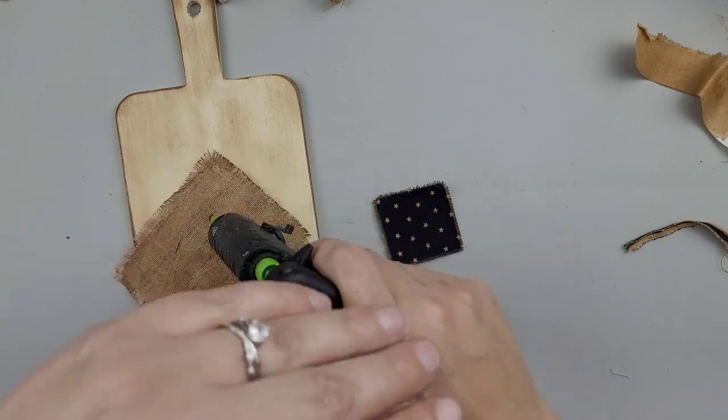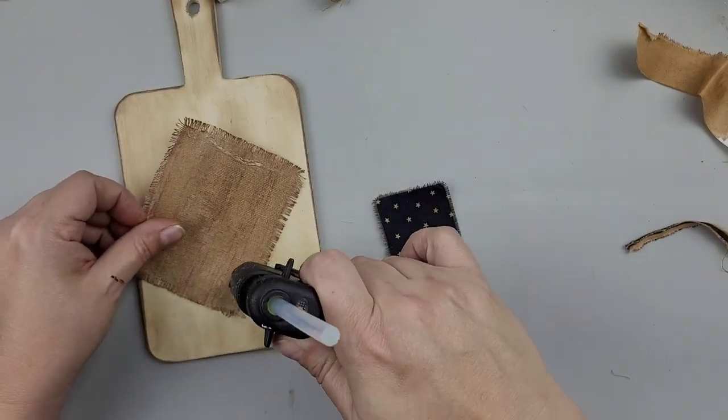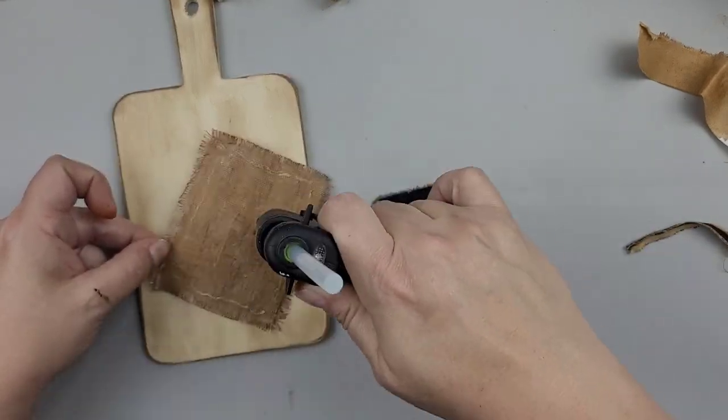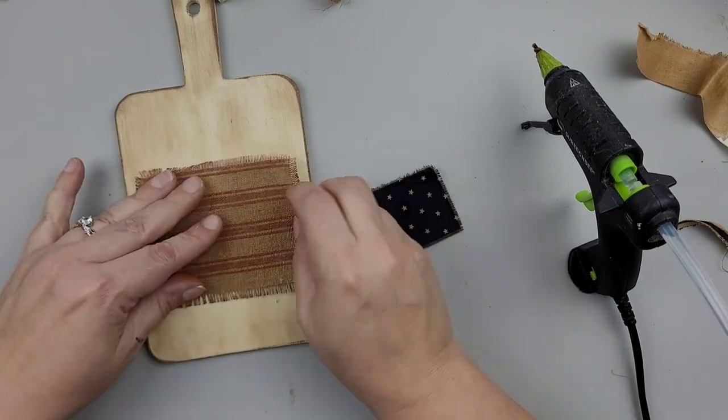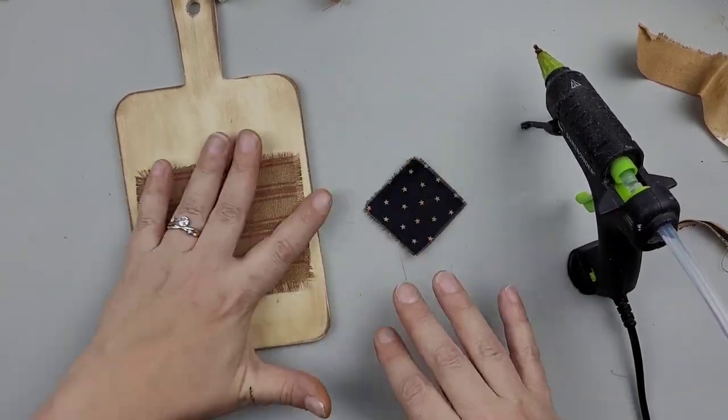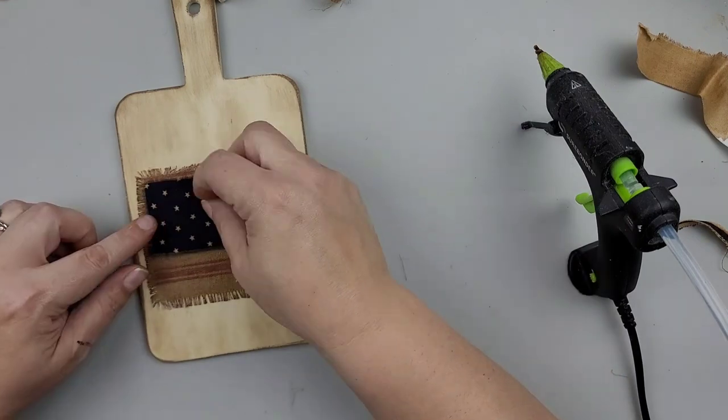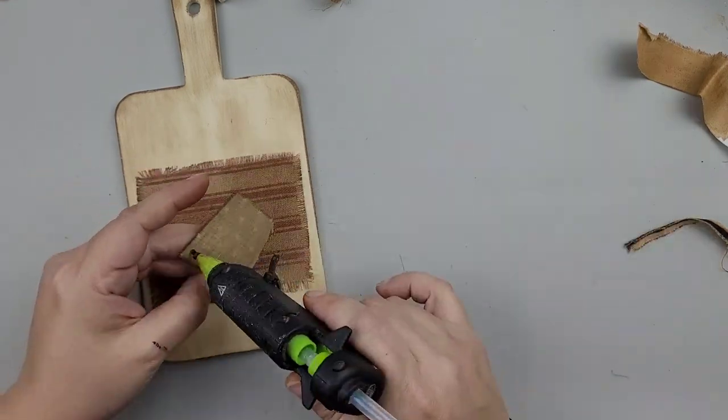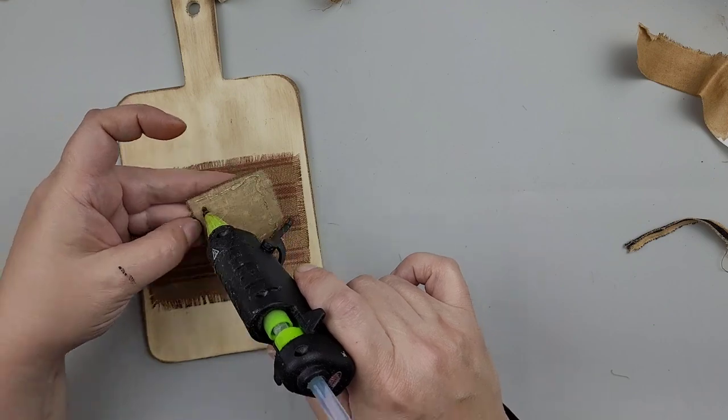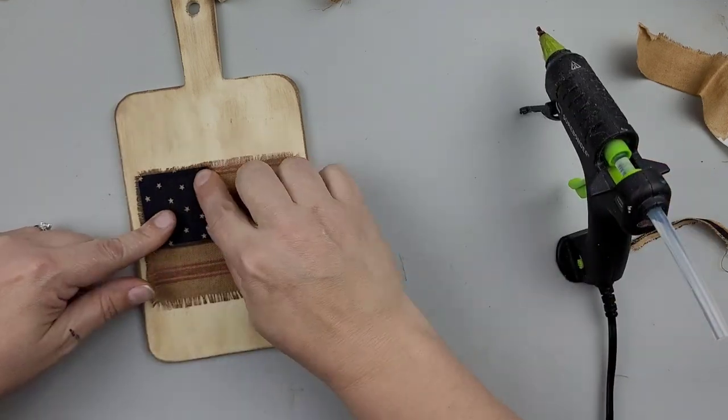And now that my fabric is dry, I'm going to add it to my cutting board with a little bit of hot glue. So I'll put that stripe down first, and then I'll go in and add the star patterned fabric on top to make our flag.